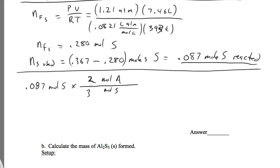And then I'm going to change that to grams: 27.0 grams aluminum for one mole of aluminum. And that gives me 1.6 grams of aluminum that reacted. We got that from the sulfur that reacted.